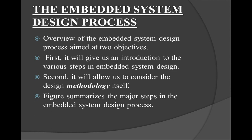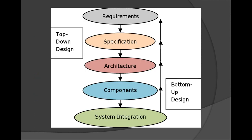If we want to design one particular embedded system, there are some steps and rules we need to follow in order to get the output for a particular application. Let us summarize the major steps in the embedded system design procedure. The diagram consists of five steps: requirements, specification, architecture, components, and finally system integration. These are the five steps we need to follow while designing one particular embedded system.